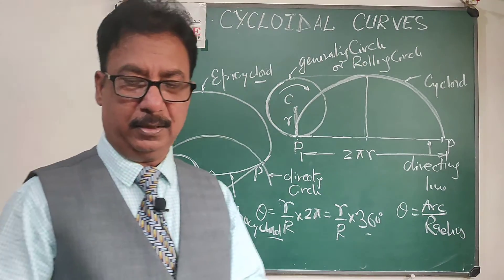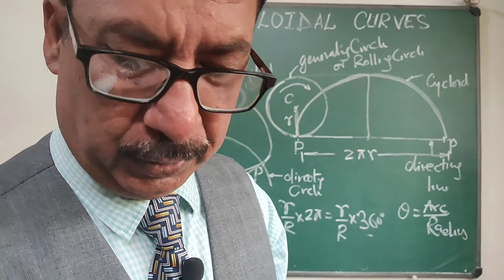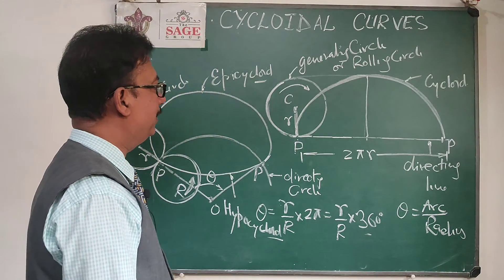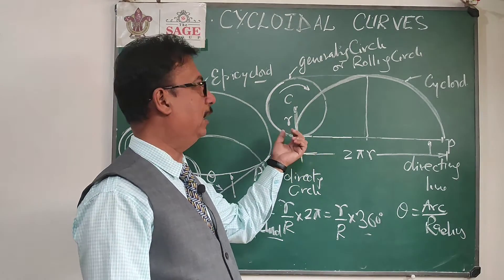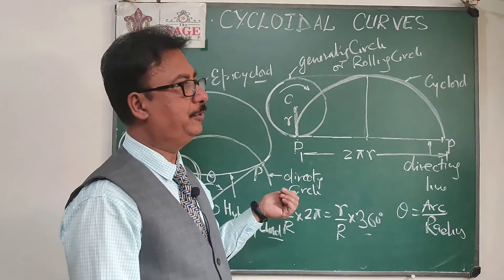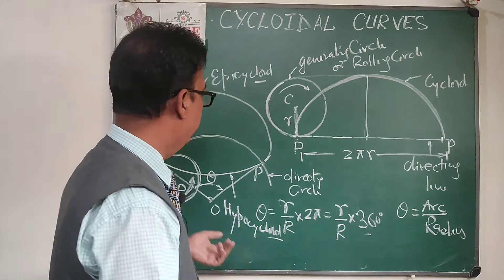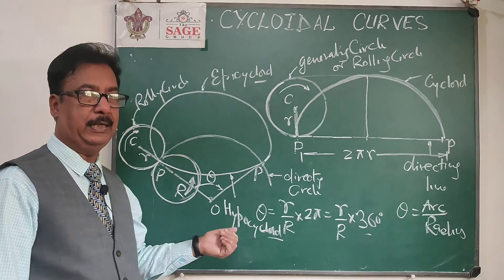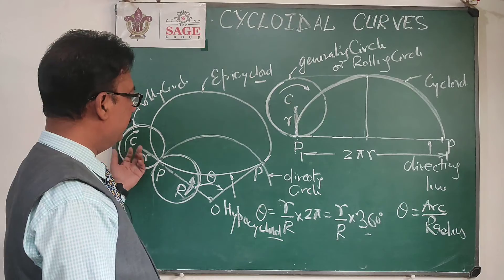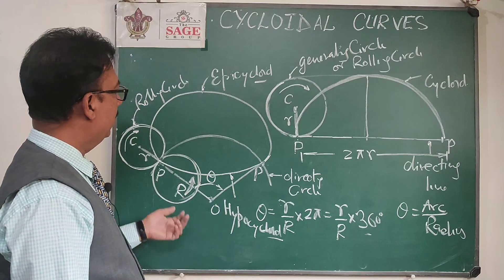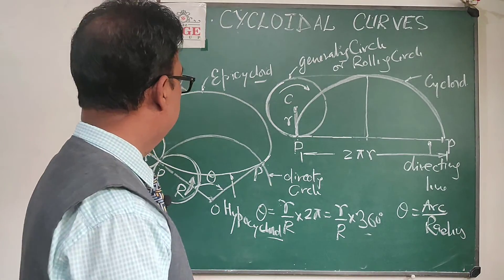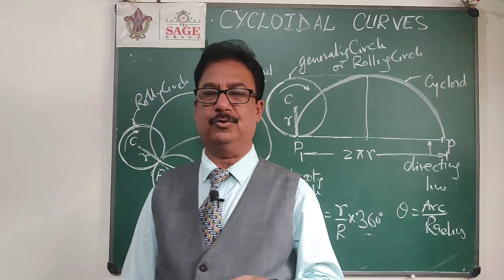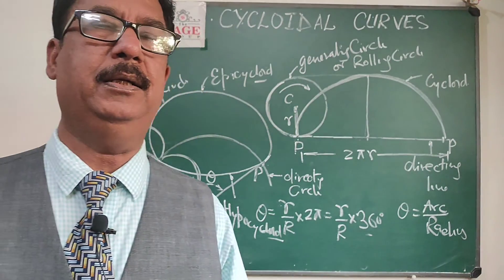These are the three cycloidal curves which we are going to draw in the next lectures step by step. For the cycloid, only the radius of the rolling circle is required. For epicycloid and hypocycloid, we need both the radius of the rolling circle and the radius of the directing circle. I hope the basic concepts are clear — in the next class I will solve problems on cycloid, epicycloid, and hypocycloid. Thank you.